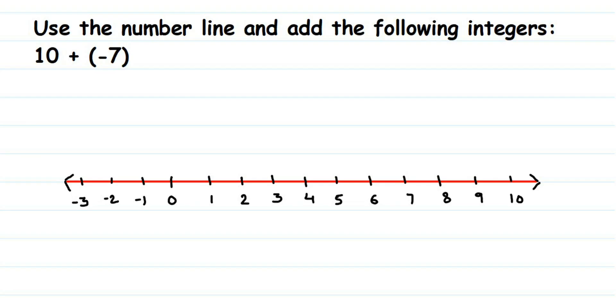Hey everyone, here's a question on number line. The question is: use the number line and add the following integers: 10 plus minus 7. So here you're adding a negative integer, that is minus 7, to 10.